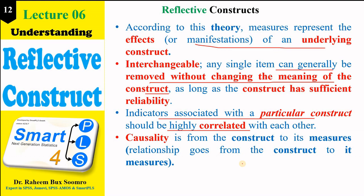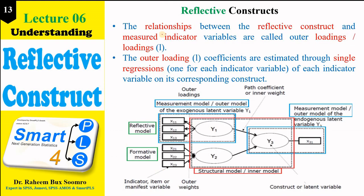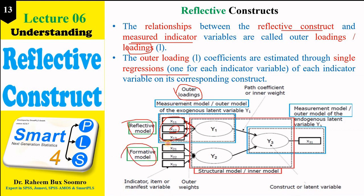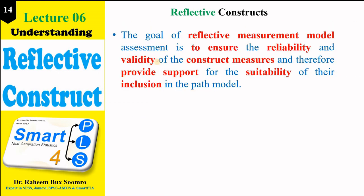The direction of causality is from the construct to its indicator. The relationship between the reflective construct and the measured indicator is shown with the help of outer loadings. The outer loading coefficient is obtained through simple regression — for example, a single regression between item X11 and its measurement model Y1. In case of the formative model, we have outer weights instead of outer loadings.